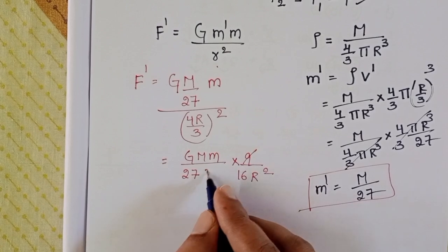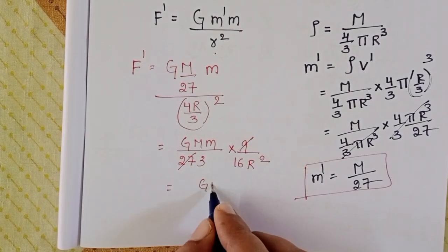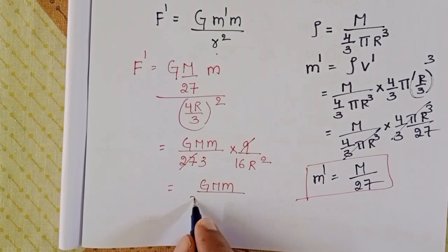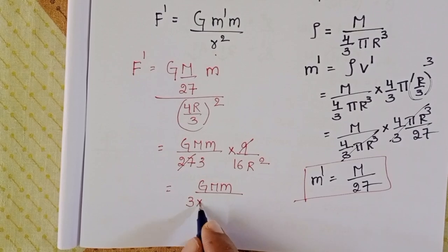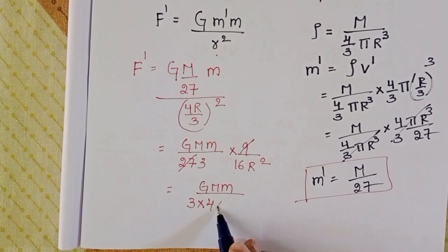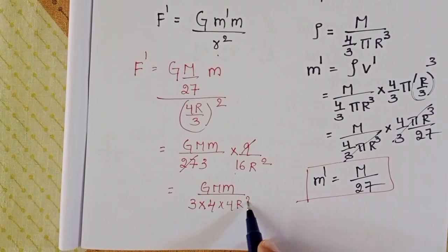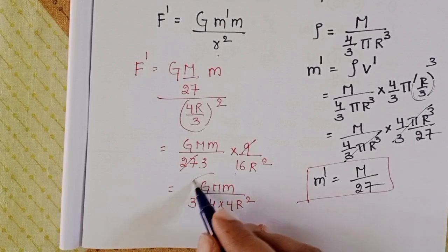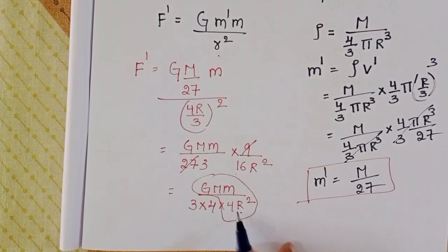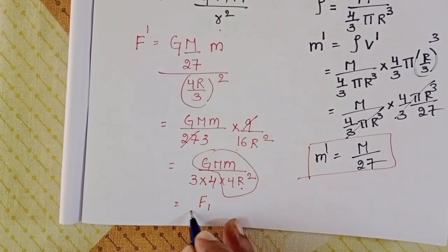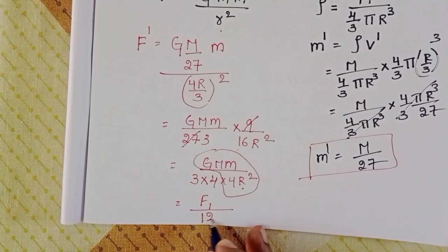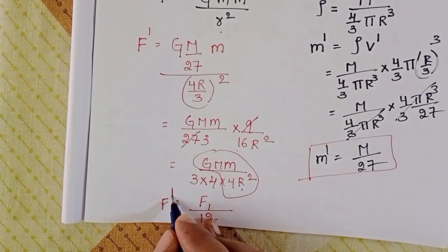Simplifying: G·M·m × 9 / (27 × 16R²) = G·M·m / (3 × 16R²) = G·M·m / (4R²) × (1/12). Since G·M·m/(4R²) = F1, we get F_dash = F1/12.